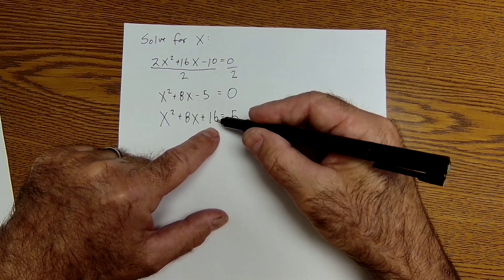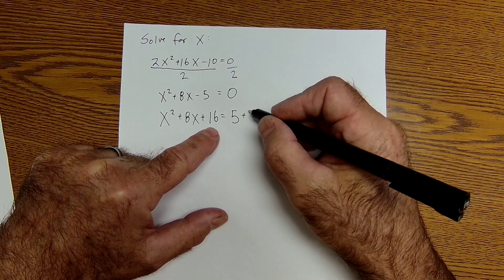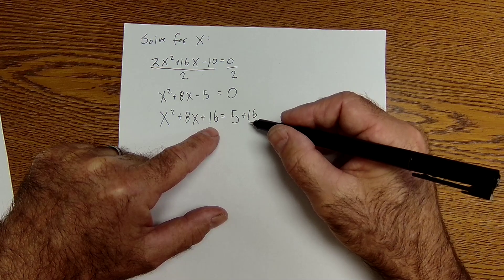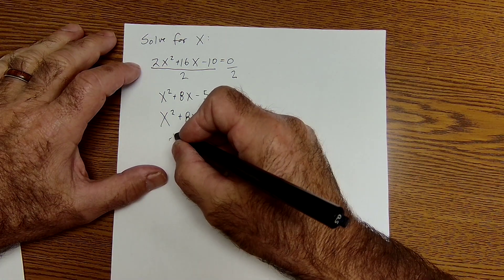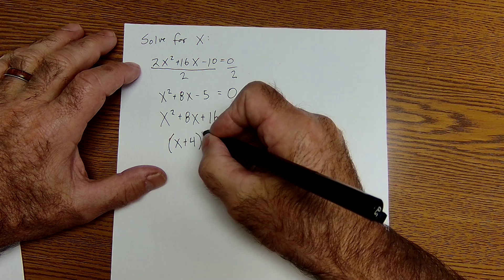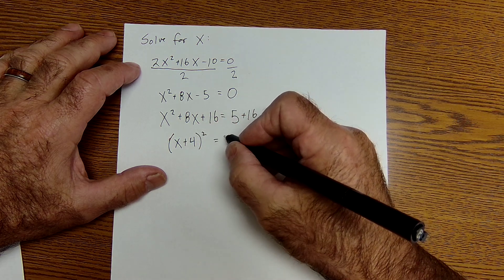I can't just add 16 on the left without adding 16 on the right. So now my equation is still balanced. Now I have the quantity X plus 4 squared equals 21.